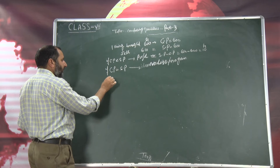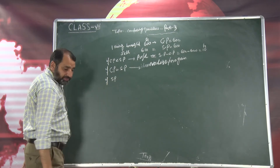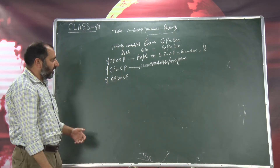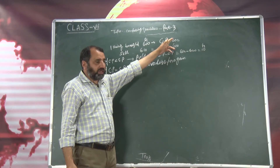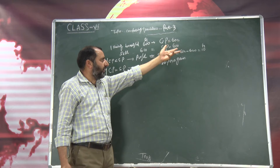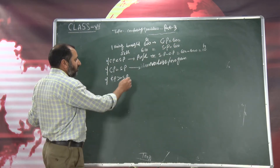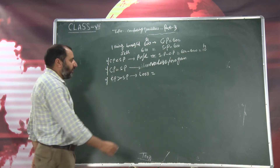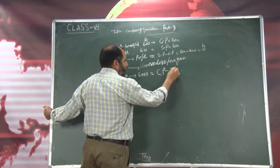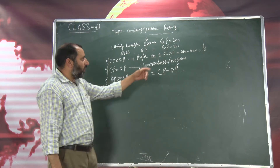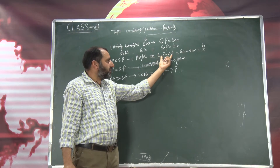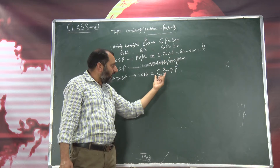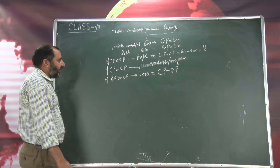Third condition hai: if CP greater than SP — agar CP zyadha hoga, SP kam — means agar hamare paas 600 rupees tha cost price, ab humane isko bheej diya hai 590 mein. To CP aya hai zyadha, SP aya hai kam — so you made a loss. To loss kiske barabar hai — loss is equal to CP minus SP. Yeh baat yaad rakhna hoga — CP minus SP. Agar aapko profit nikalna hoga to SP minus CP, agar loss nikalna ho to CP minus SP.